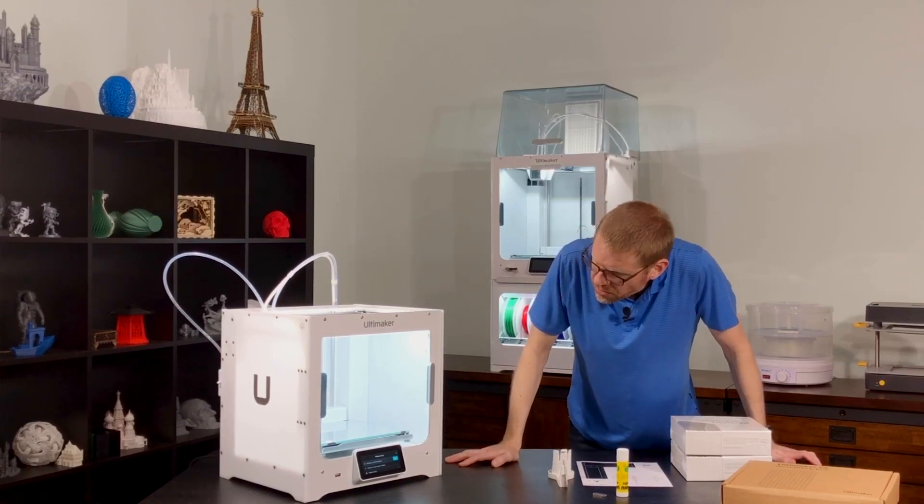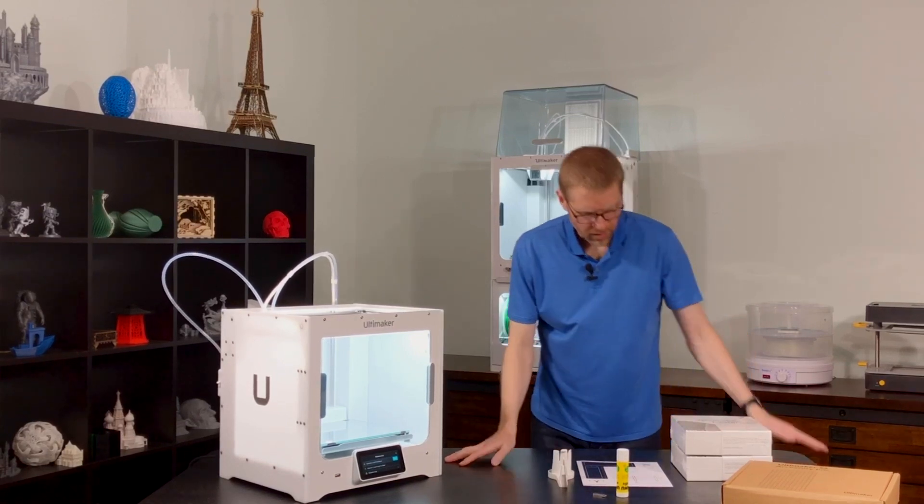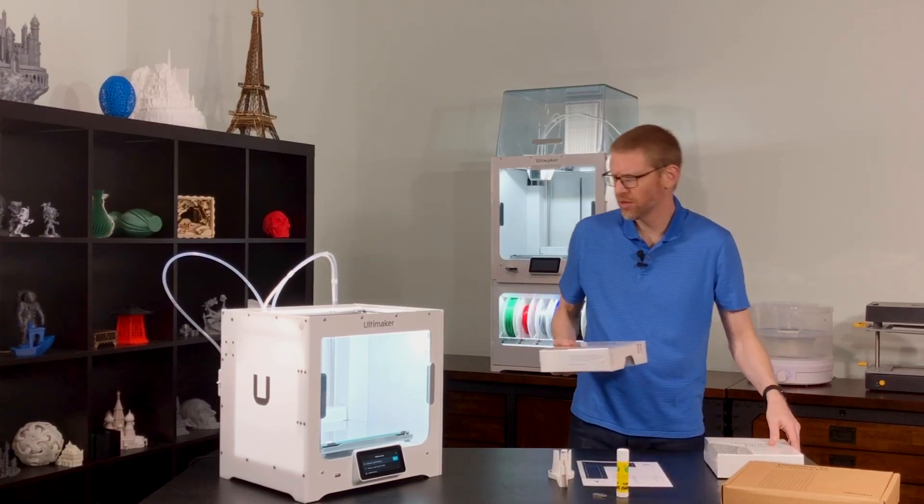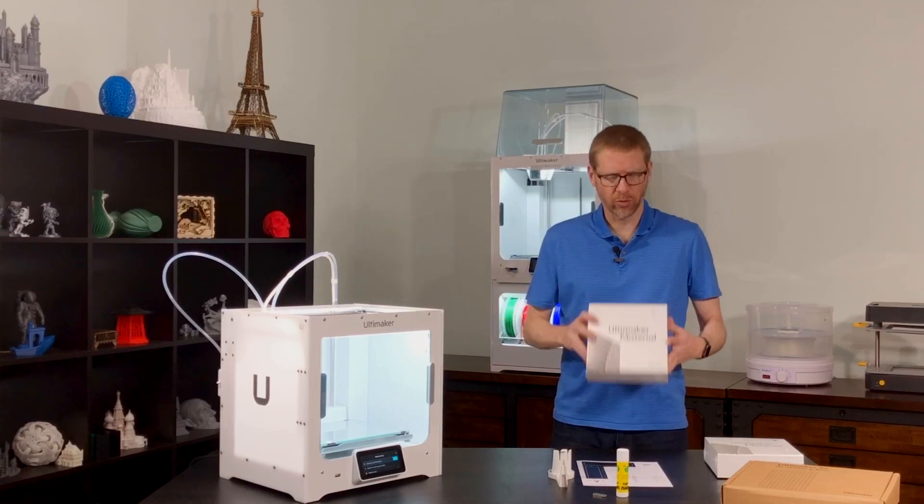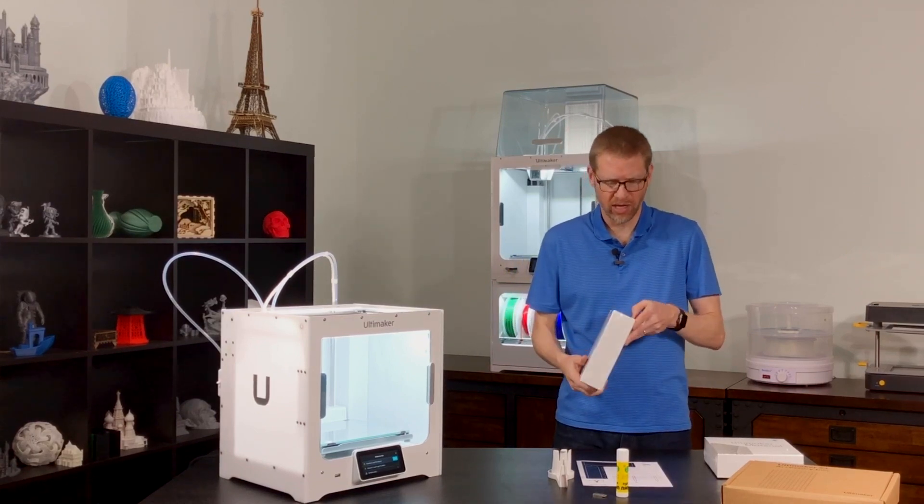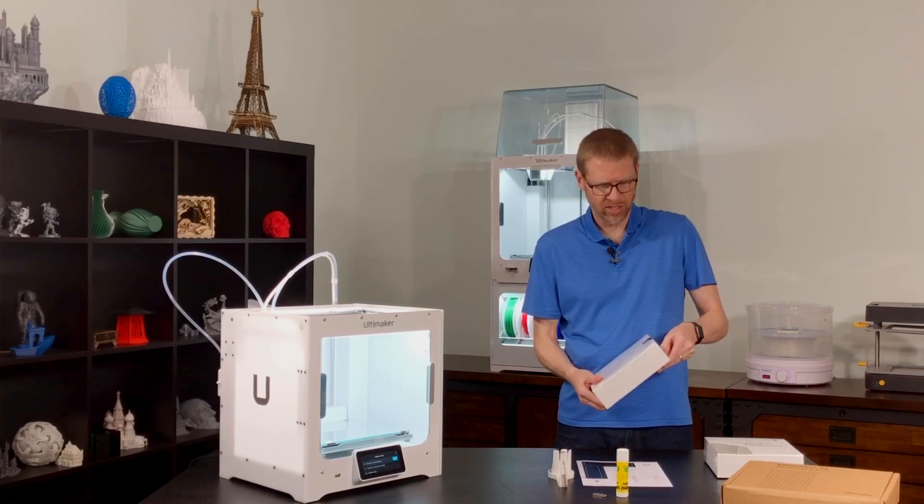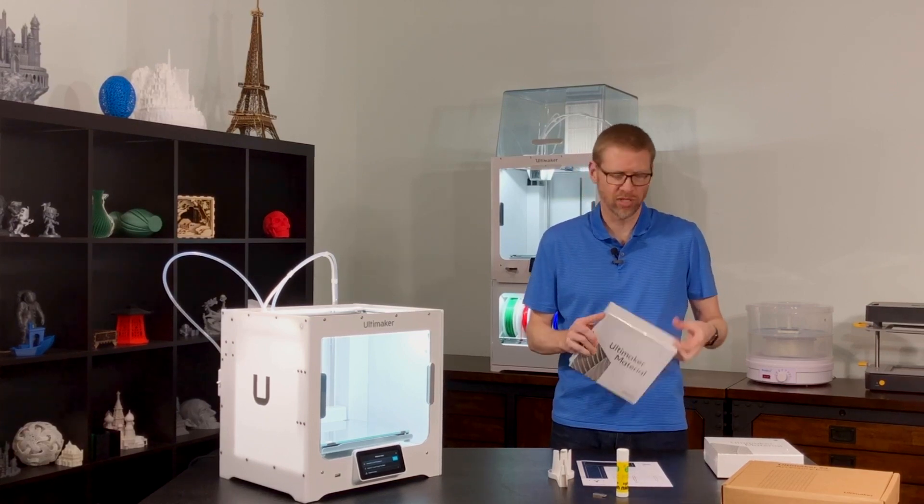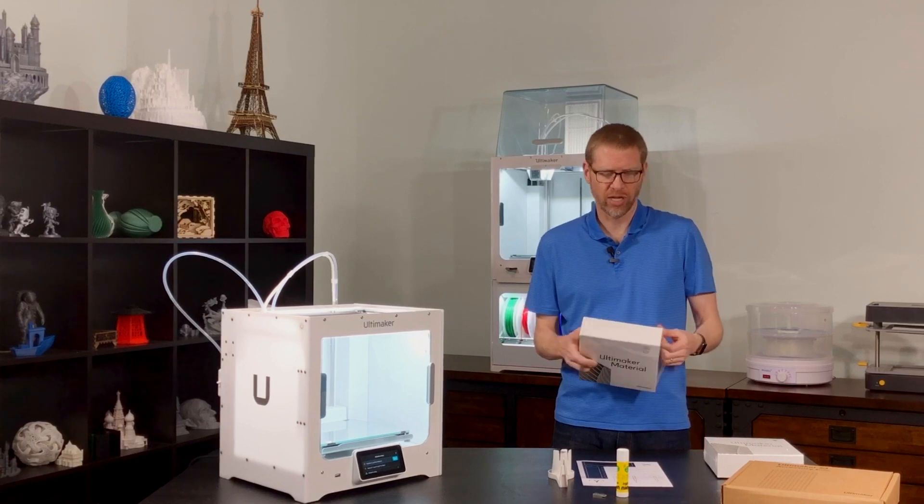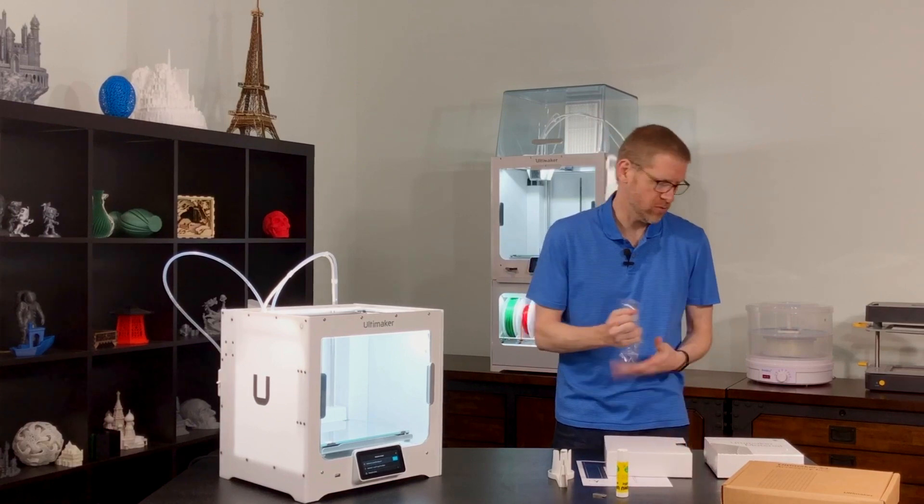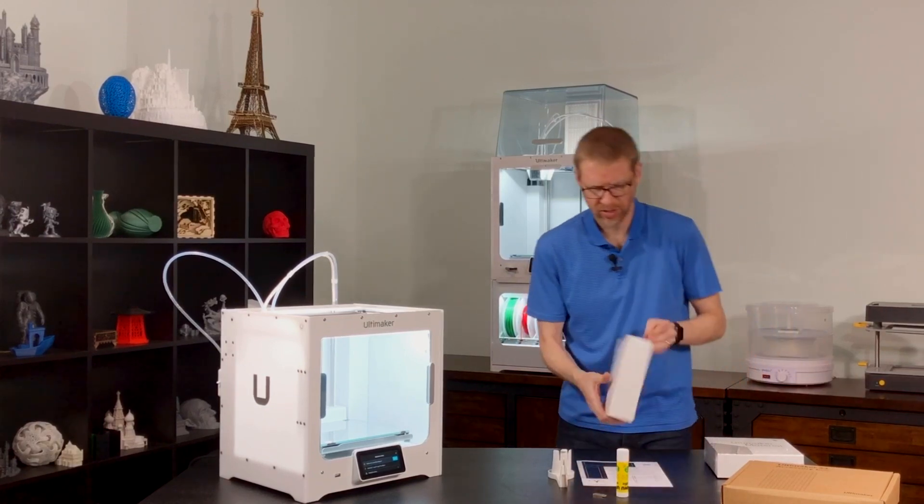And now it's prompting us to load materials, starting with material number two. In case you're not familiar with the Ultimaker 3 series or the S5 with the dual spool holders, you want to load one material at a time so that the NFC chips can be properly detected, so that it knows what kind of material you're loading. If you try to put two new spools on at the same time, the printer will not be able to detect which one you're trying to load. So you do one, and then the other one, in order to ensure proper detection.